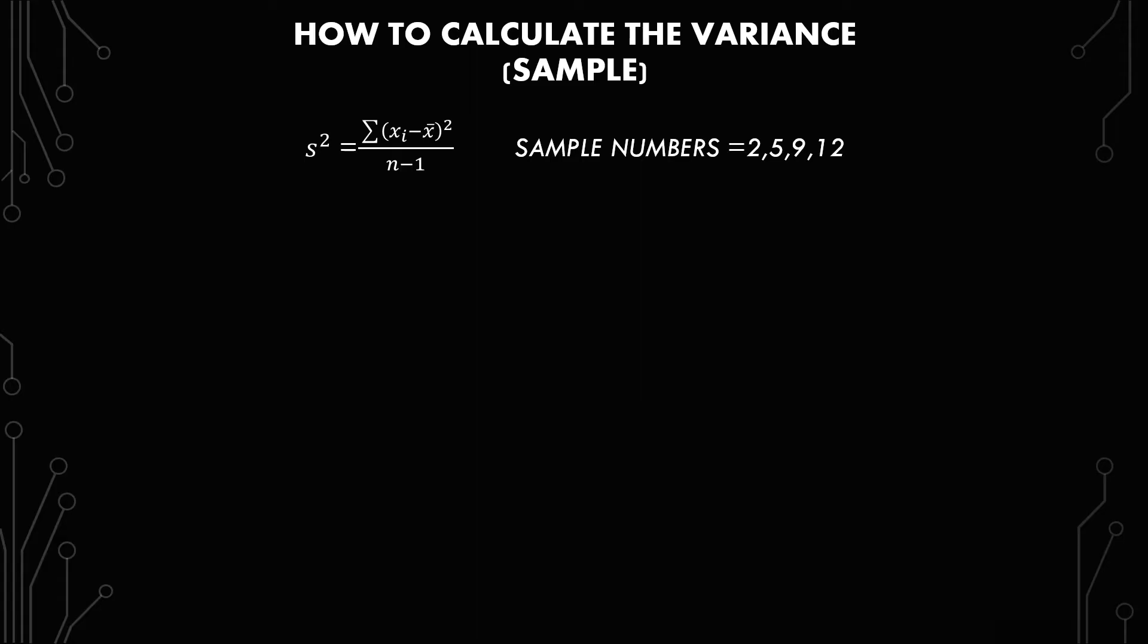Just getting into the formula, we have the summation of each x minus the mean squared over n minus 1. And the sample I'm using only has four numbers: 2, 5, 9, and 12.